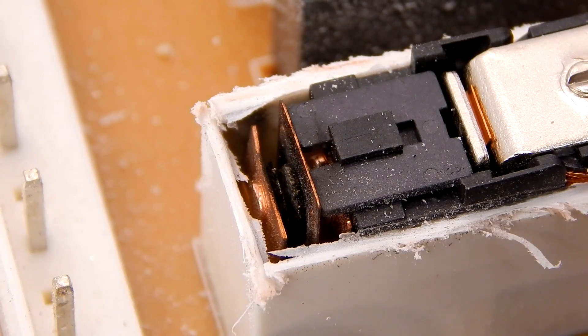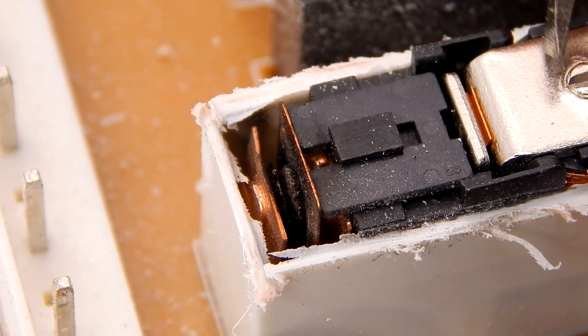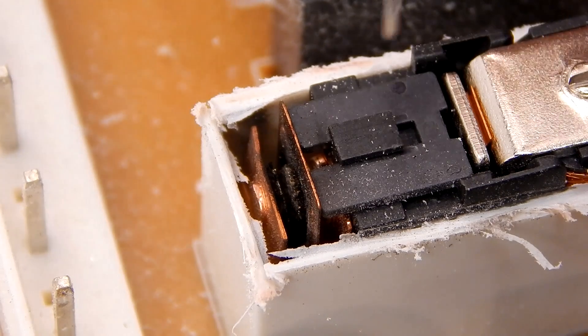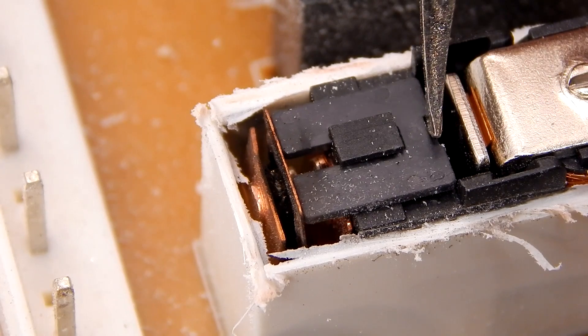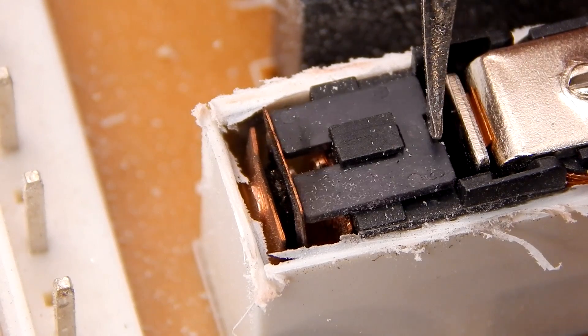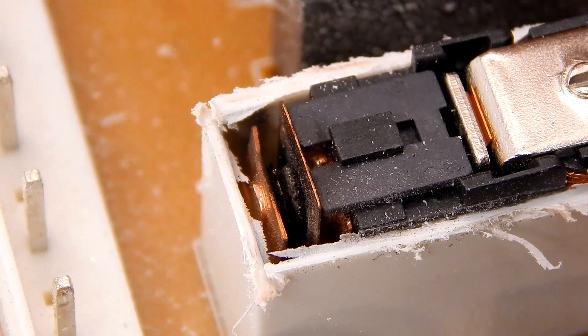Okay, so what we're looking at right here, this is the coil, this is what gets the low voltage signal that pushes out the solenoid which closes the contacts. You can see the contact right there.